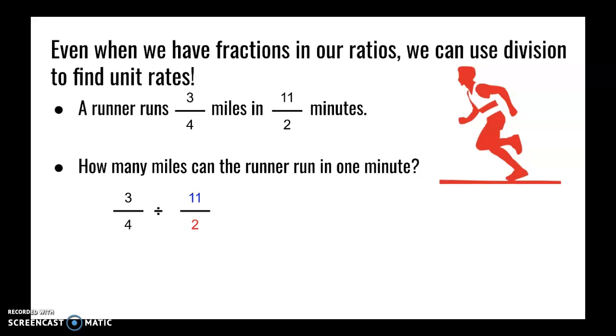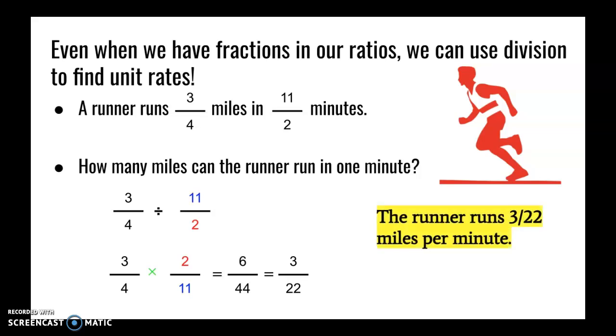Remember that when you divide, you can keep the first number the same and change division to multiplication, and then multiply by your reciprocal. So instead of 11/2, write 2/11. When multiplying fractions, we multiply straight across. The numerator, 3 times 2, gives you 6. The denominator, 4 times 11, gives you 44. We can reduce 6/44 to equal 3/22. This gives us a unit rate of miles per minute, so the runner can run 3/22 of a mile per minute.